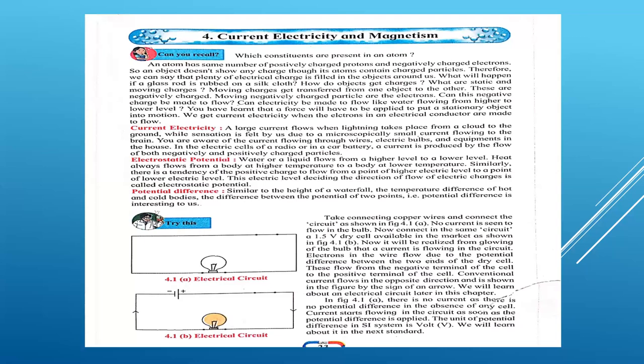As you can see in your textbook, page number 23, they have given two figures. In the first figure, the bulb is not glowing — I will tell you the reason. But in the second figure, the bulb is glowing.